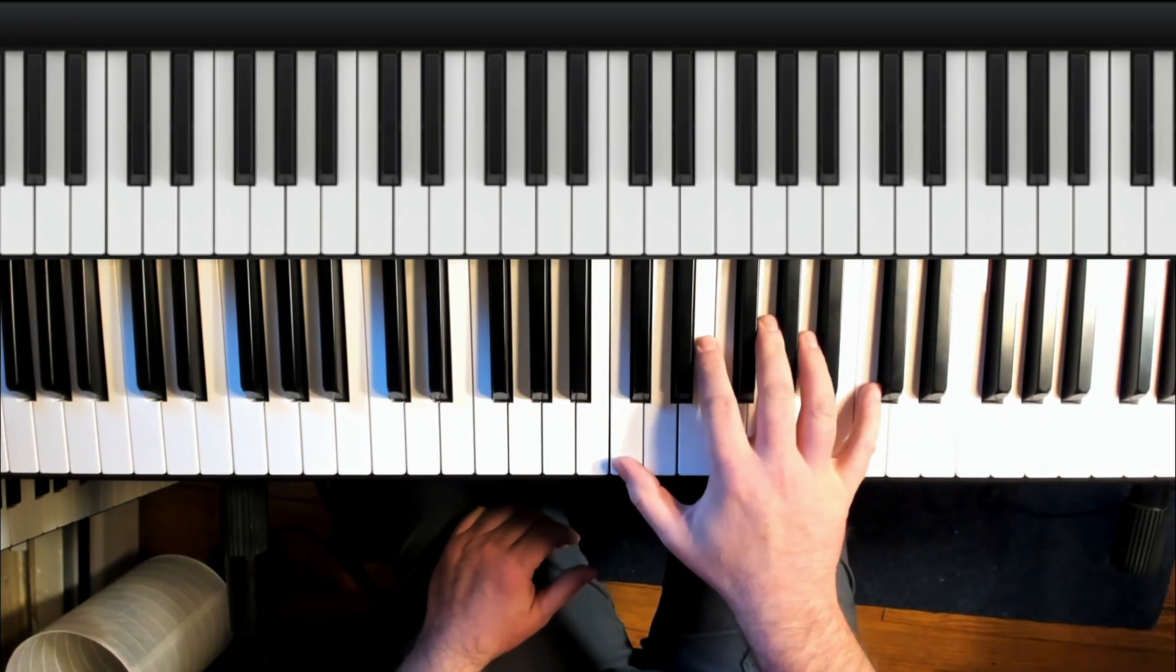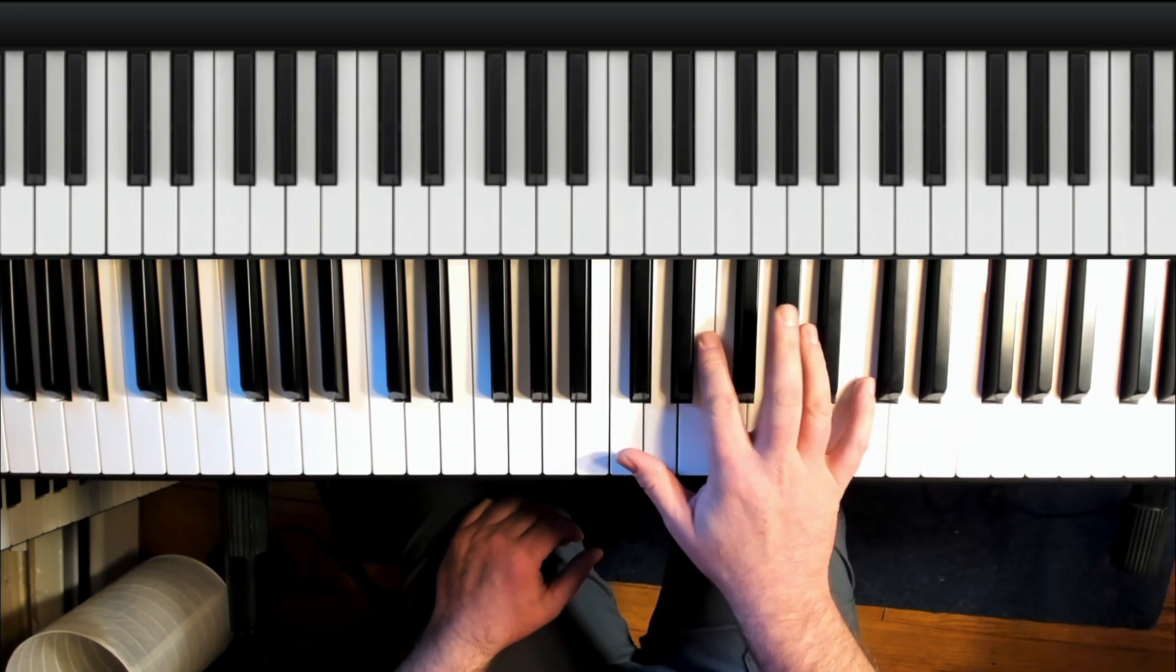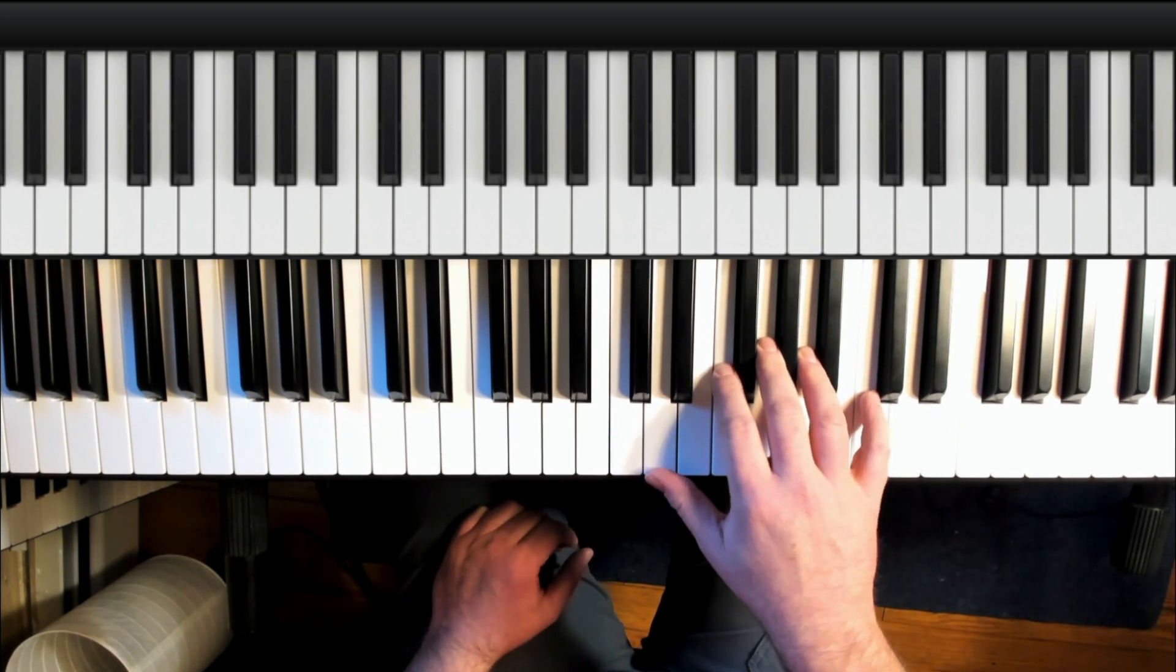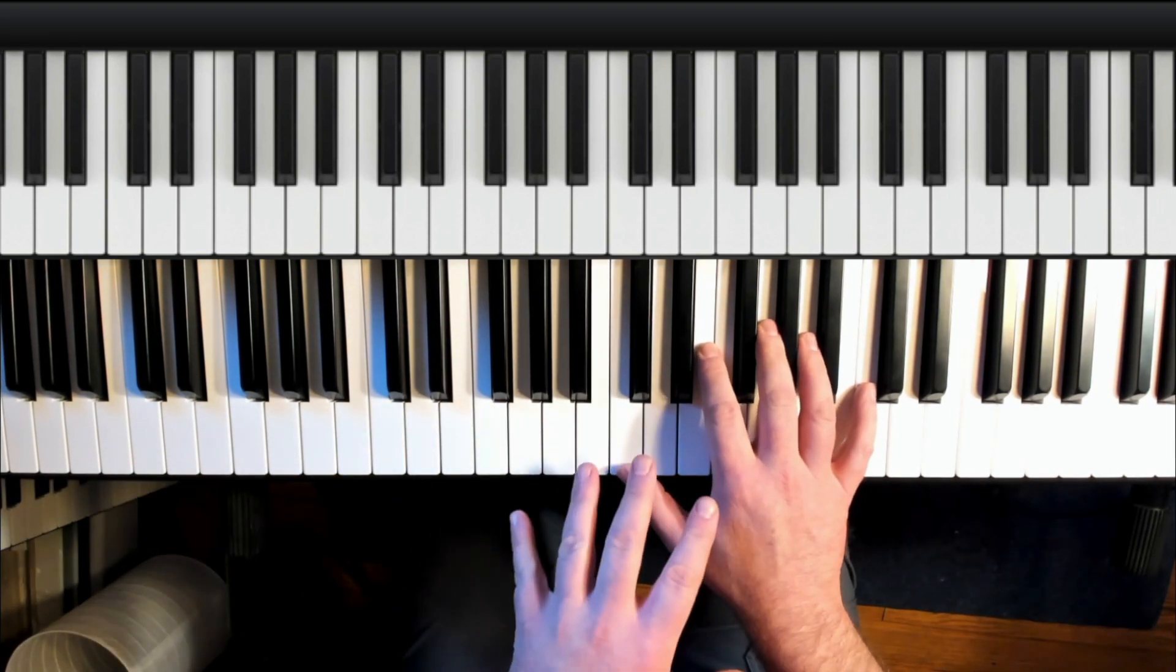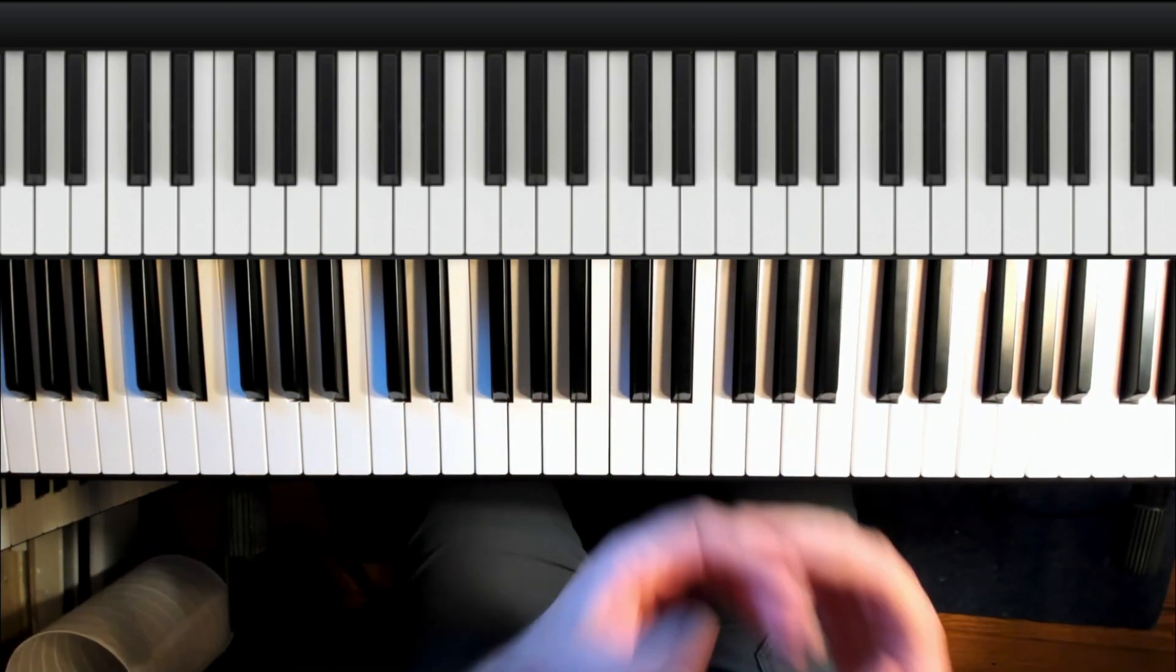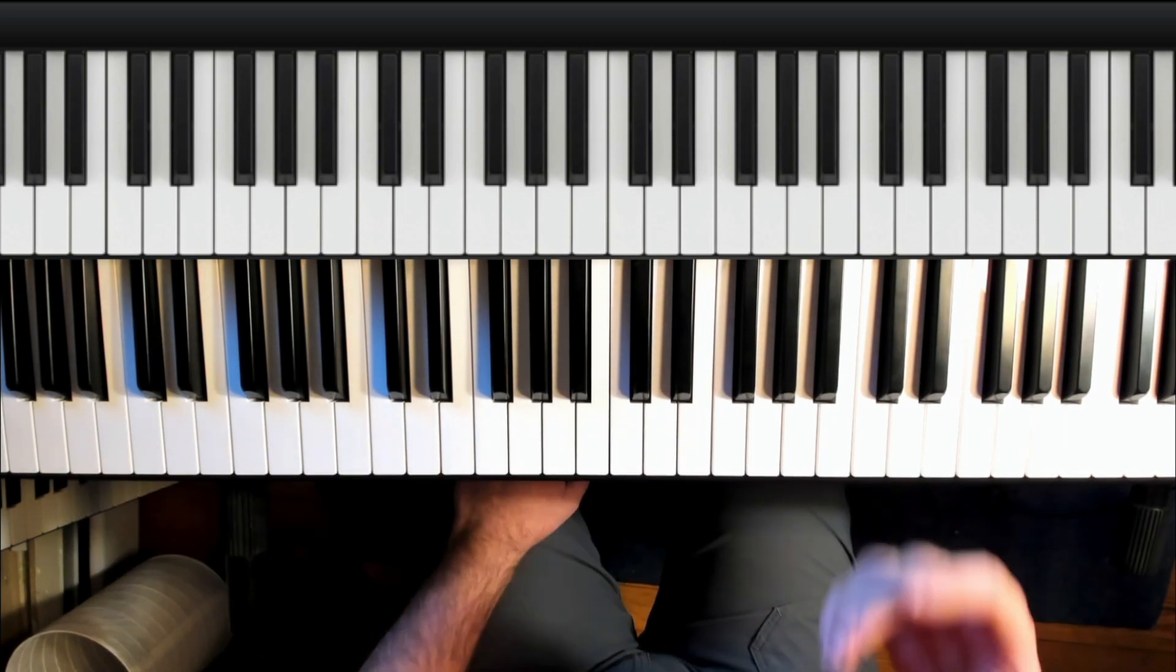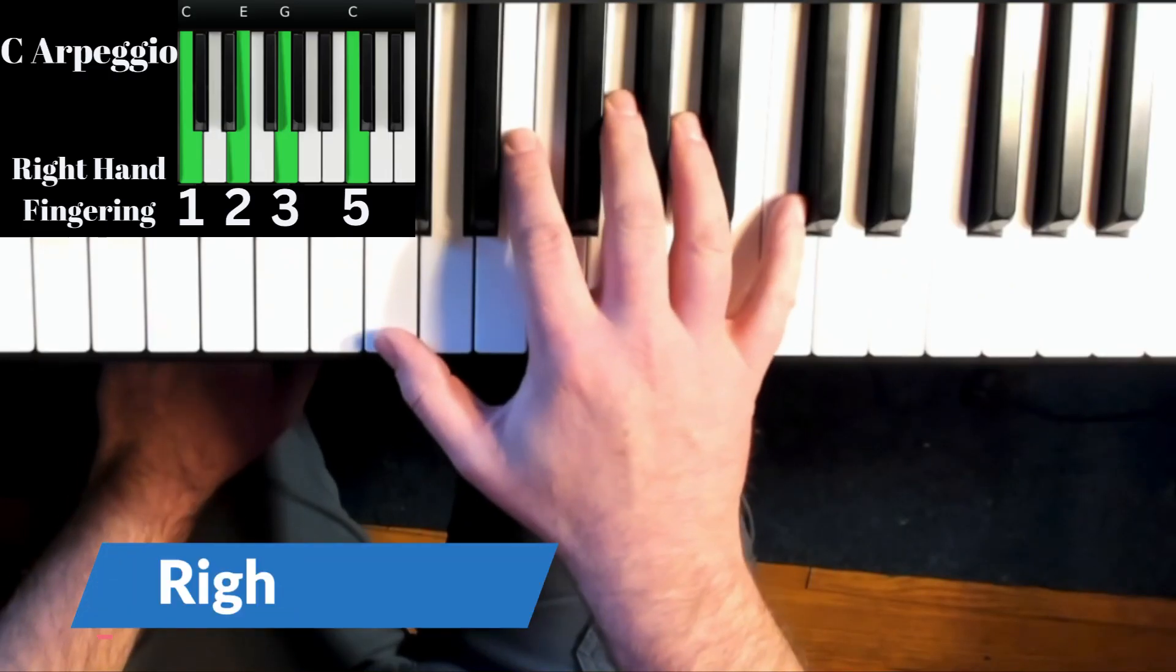Hand shape time with the right hand. We're going to focus the one finger on C, two finger on E, third finger on G and then the five finger on C. I'm going to go through it slowly, give you some simple ways to get comfortable.